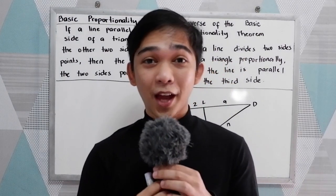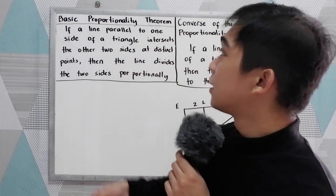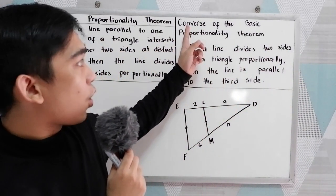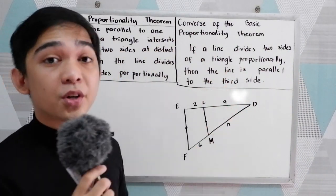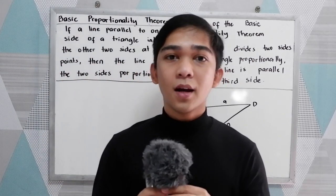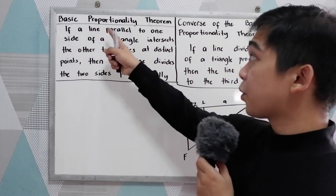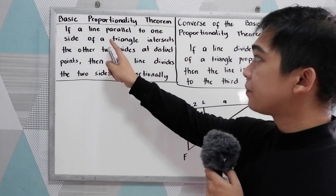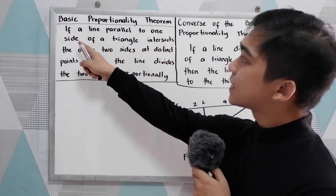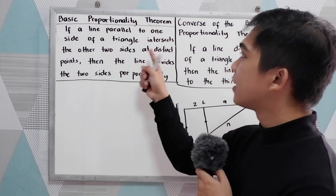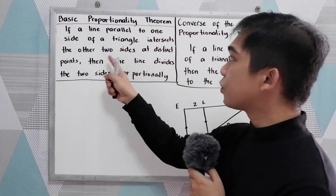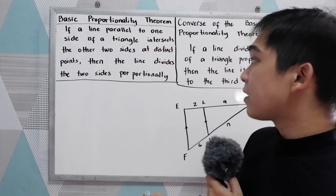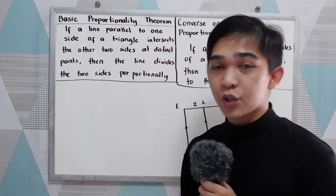Good day everyone. Today I will be discussing the basic proportionality theorem and the converse of the basic proportionality theorem. If a line parallel to one side of a triangle intersects the other two sides at distinct points, then the line divides the two sides proportionally.